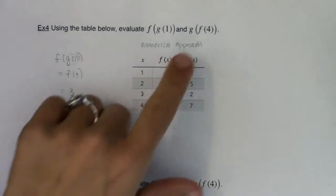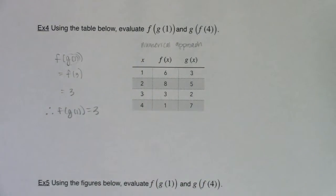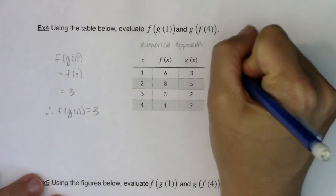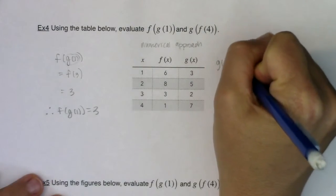All right, well let's try g of f of 4 and you might want to start trying a few of these on your own. Like if I do one you try the other before you see the video play out. You can always pause it. So let's see what we have here. Let's do g of f of 4.